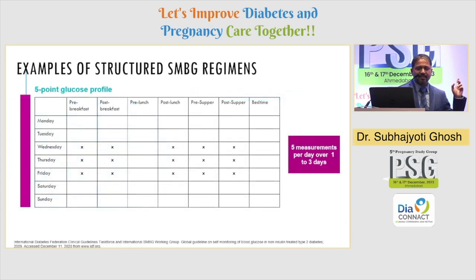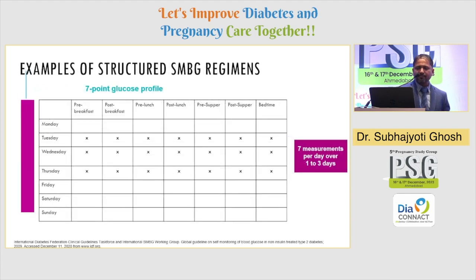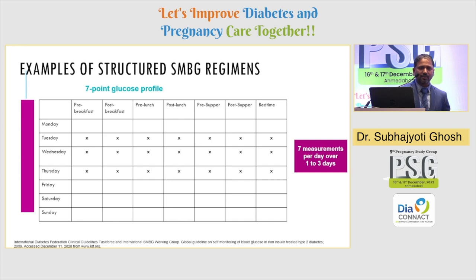There are a few examples. This is called the five-point SMBG, where we are doing it at five points over a three-day period. Next, there is the seven-point SMBG, which can be done over one to three days to understand the pattern of fluctuations of the patient.